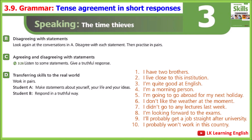3.26, Exercise C: Listen to some statements and give a truthful response. One: 'I have two brothers.' Two: 'I live close to this institution.' Three: 'I'm quite good at English.' Four: 'I'm a morning person.' Five: 'I'm going to go abroad for my next holiday.' Six: 'I don't like the weather at the moment.' Seven: 'I didn't go to any lectures last week.' Eight: 'I'm looking forward to the exams.' Nine: 'I probably won't work in this country.'